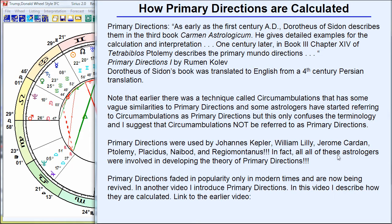So a very important predictive technique that had a long life and the support of many great astrologers — and then it fades out in modern times. Why would it suddenly fade out? Because it requires a lot of calculation and a lot of understanding of astronomy and even spherical trigonometry. In modern times, astrologers don't have that technical understanding, so the idea was dropped just because it's too complicated.